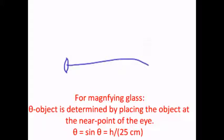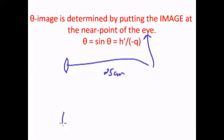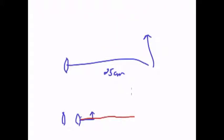Magnifier generally compares how tall the object would appear at 25 centimeters from the eye versus how big it appears through the magnifying glass when you put it right here and the image is formed way over here at 25 centimeters.